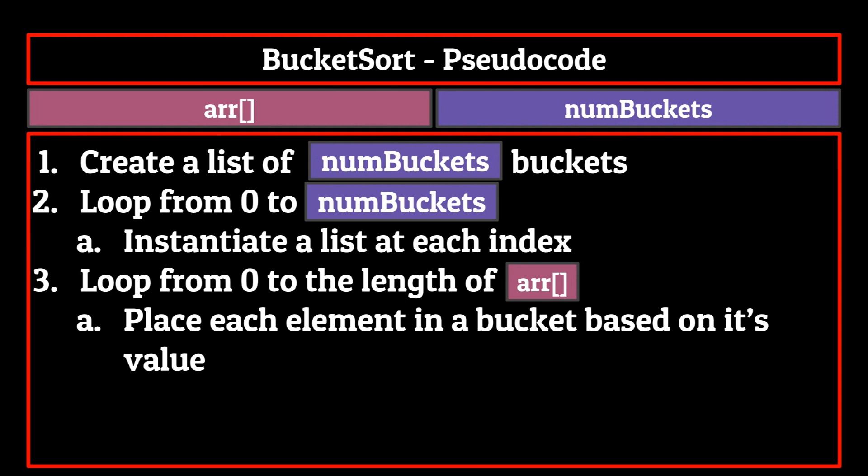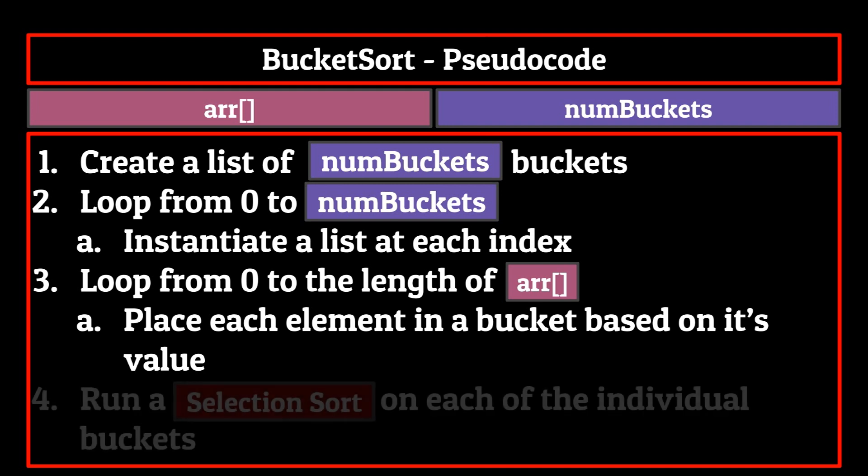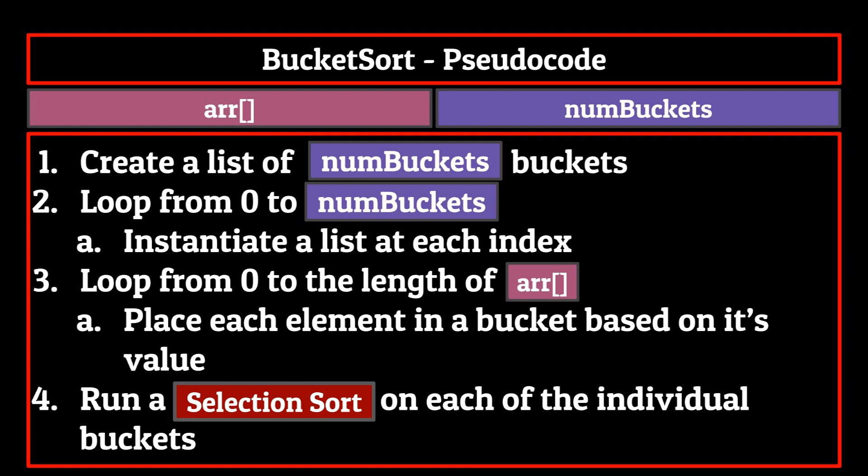Now we're finally ready to go back to our pseudocode and finish things off. We are currently looping through the size of the data set and calculating the bucket number for each element. We then want to place that element in the particular bucket of our buckets list. For a final step in the process, we run a selection sort on each of the individual buckets. After all these have completed, we will have a sorted list.